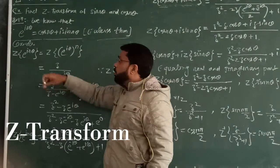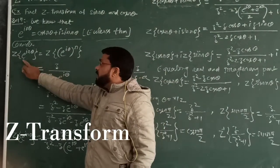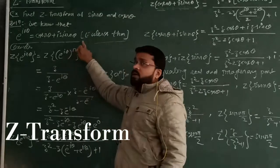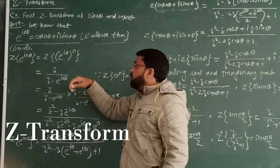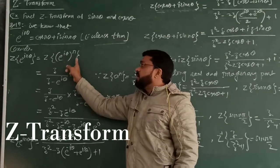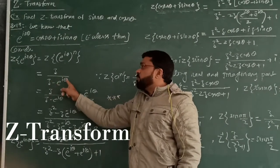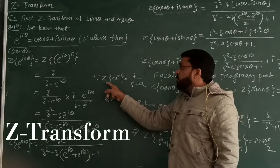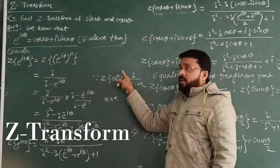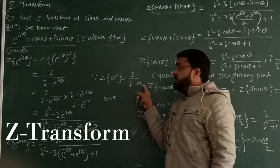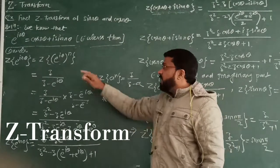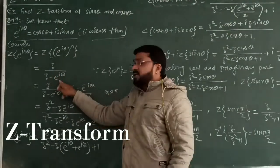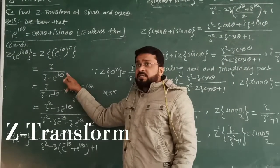Let us see how. The Z-transformation of e raised to the power i·n·θ — by the formula, Z-transformation of e raised to the power n is Z upon (Z minus a). Here we have a = e raised to the power i·n·θ. So it will be Z upon (Z minus e raised to the power i·n·θ).